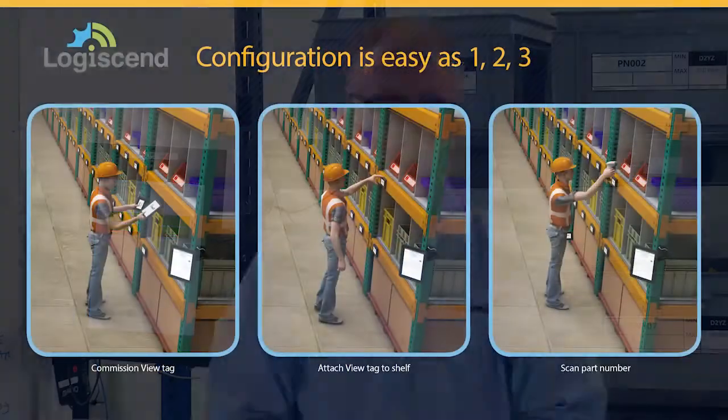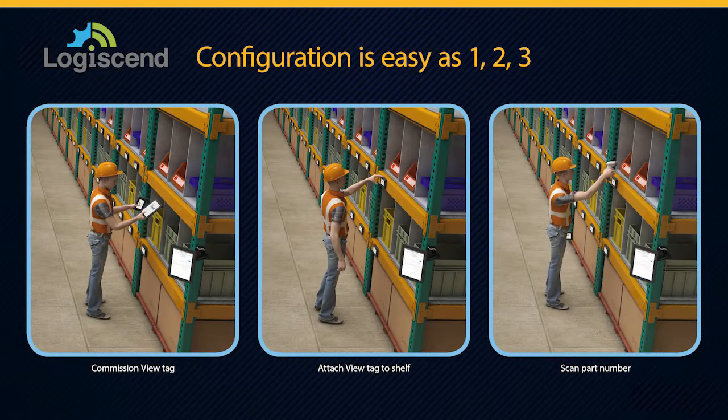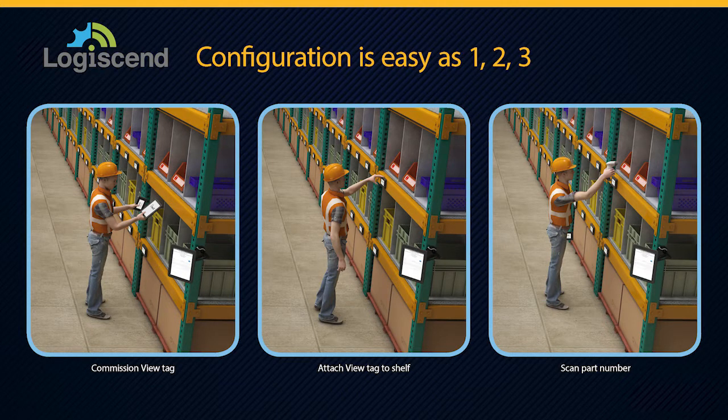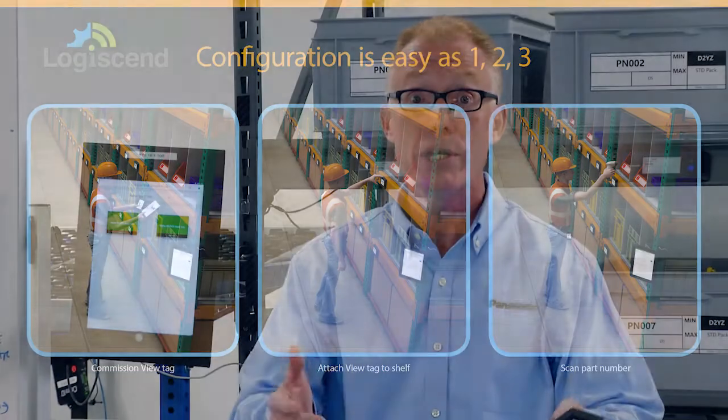So in terms of setup, very easy, really only two steps. For the setup, every tag has a unique identifier. I'm simply going to be marrying that unique identifier with whatever part number I use in my system today. That'll be the commissioning.